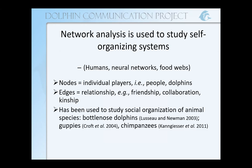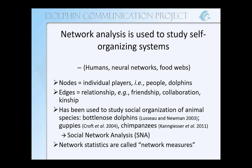Network analysis has been used to study social organization in a few animal species, including bottlenose dolphins, guppies, and chimpanzees. And when it's applied to these social systems, we call it social network analysis, or SNA.